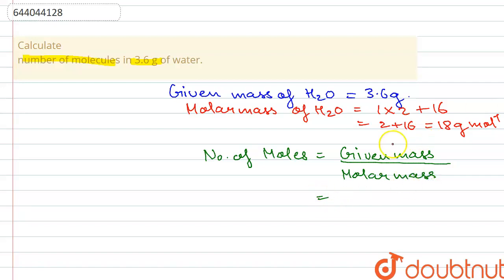Substituting these values: given mass is 3.6 and the molar mass is 18. So that will be equal to 0.2 moles.